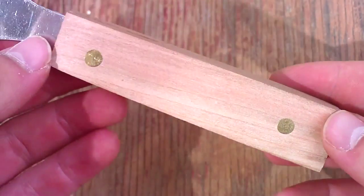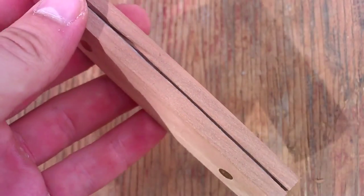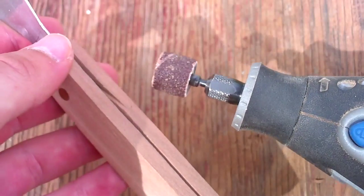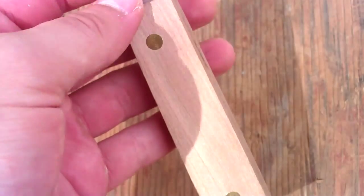Alright, so the next step will be to shape the handle since I have it on here now. And for that, I'm just going to use my Dremel with a sanding bit. And I'll just go up and down that line right there.